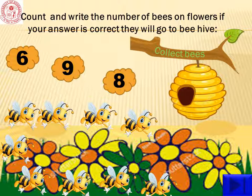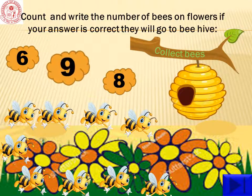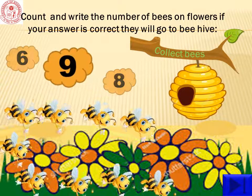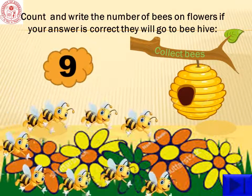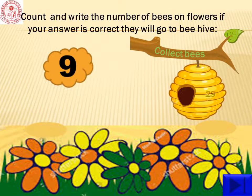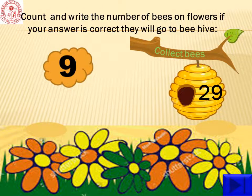One, two, three, four, five, six, seven, eight, nine. There are nine bees. Click on number nine. They are flying into the beehive. Wow, we collected 29 bees. Let us collect more bees.